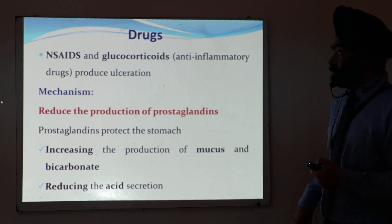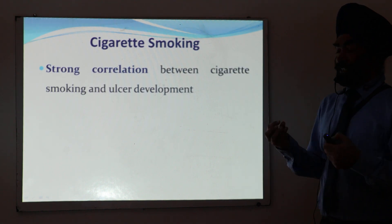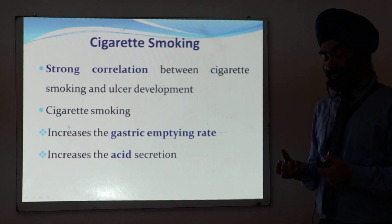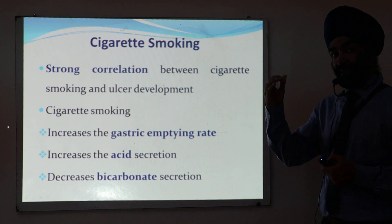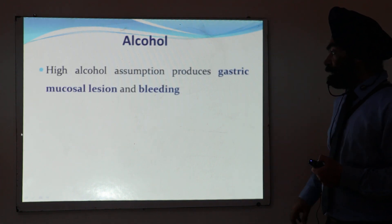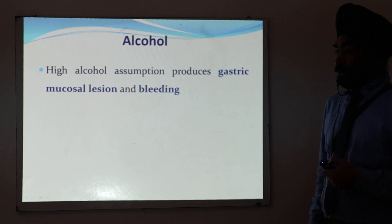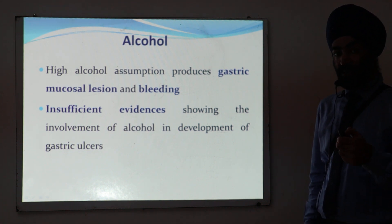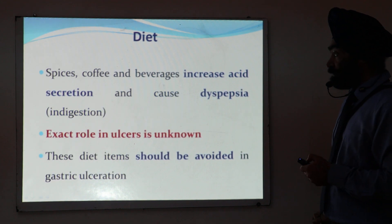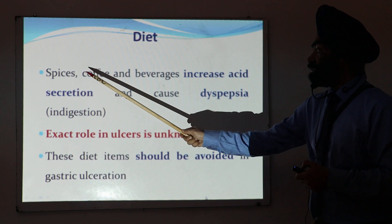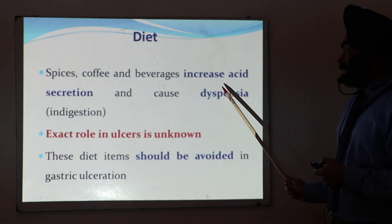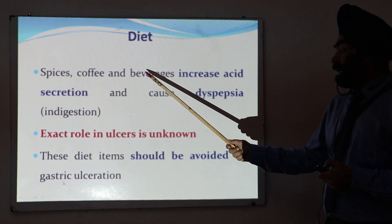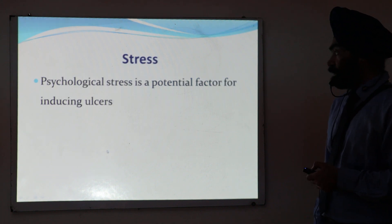Regarding cigarette smoking, there is a strong correlation with ulcer development. Cigarette smoking increases gastric emptying time, increases acid secretion, and decreases bicarbonate — increasing aggressive forces and decreasing defensive forces. Alcohol can produce gastric lesions and bleeding, but there is not sufficient evidence directly linking it to ulcer formation, though it can exaggerate existing ulcers. Dietary items like spices, coffee, and beverages increase acid secretion and can cause dyspepsia, and should be avoided by peptic ulcer patients.